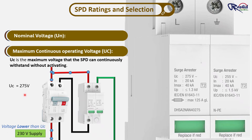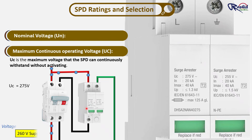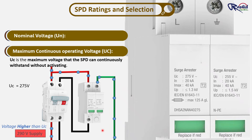For example, with a 230V system, the SPD's UC rating might be 275V. At 230V the SPD stays inactive, and even if a quick spike takes the voltage to 260V, it still does nothing because this is below the UC limit. But when a sudden surge jumps to 290V — higher than the UC rating — the SPD instantly activates and diverts the extra energy safely to earth. Remember, SPD only works for extremely fast spikes or surges lasting microseconds or nanoseconds, like lightning strikes or switching surges. It does not protect against slow or continuous overvoltage.